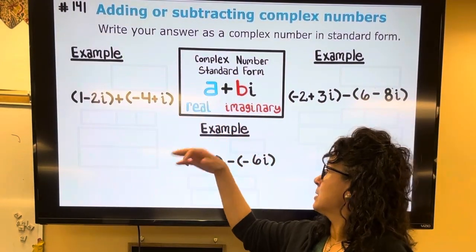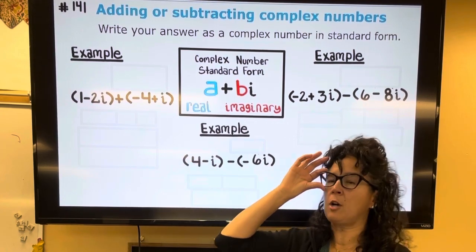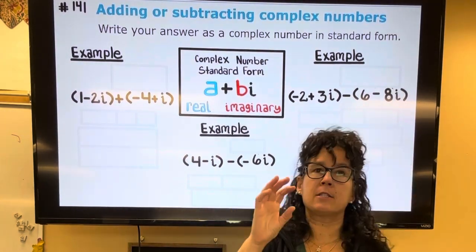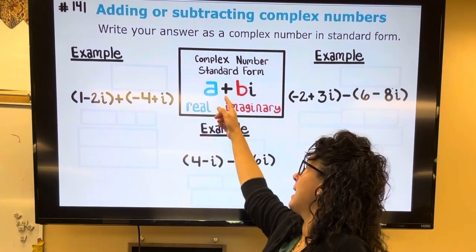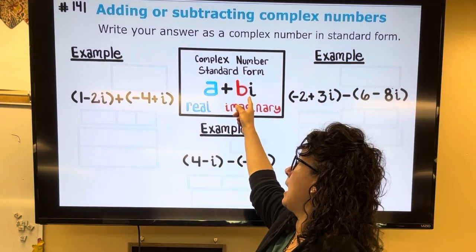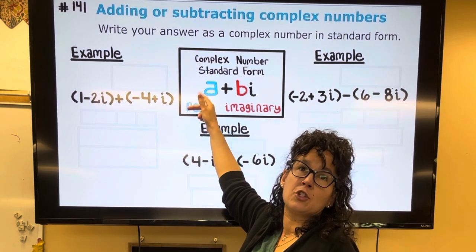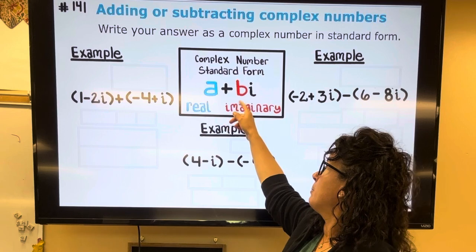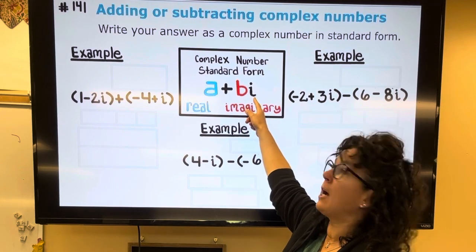We're going to add some complex numbers and subtract some complex numbers. So first, what is a complex number? It's going to be something that can be written as a + bi. The number that's here in the front, that's your real number, like a 5, a 7, a 12. And then plus a number times i, and this is your imaginary portion.